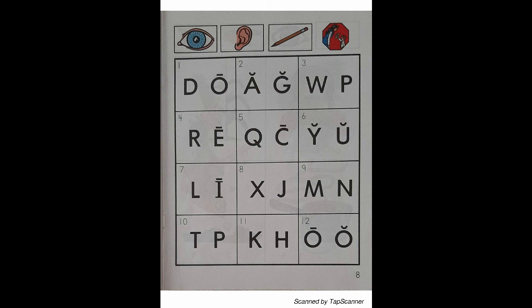Look at the letters in box 2. Listen as I say the sound of the letter. G — Goldfish — G. With your pencil, circle the letter that reads G.